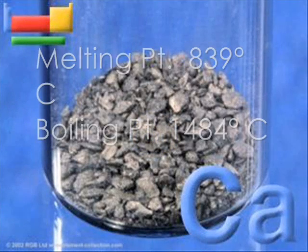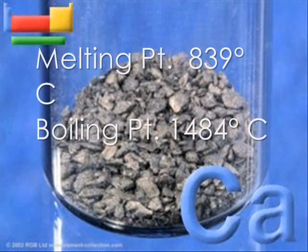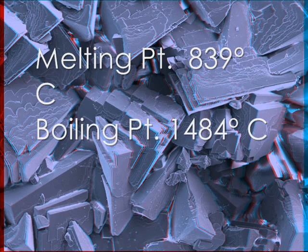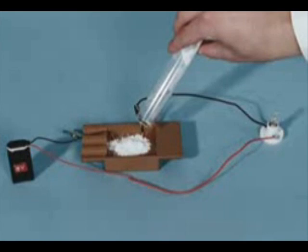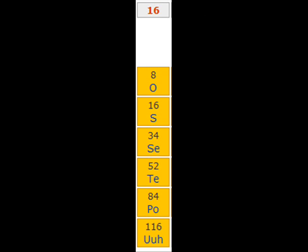Calcium's melting and freezing point is 839 degrees Celsius. Its boiling and condensing point is 1,484 degrees Celsius. Calcium is also a conductor of electricity.